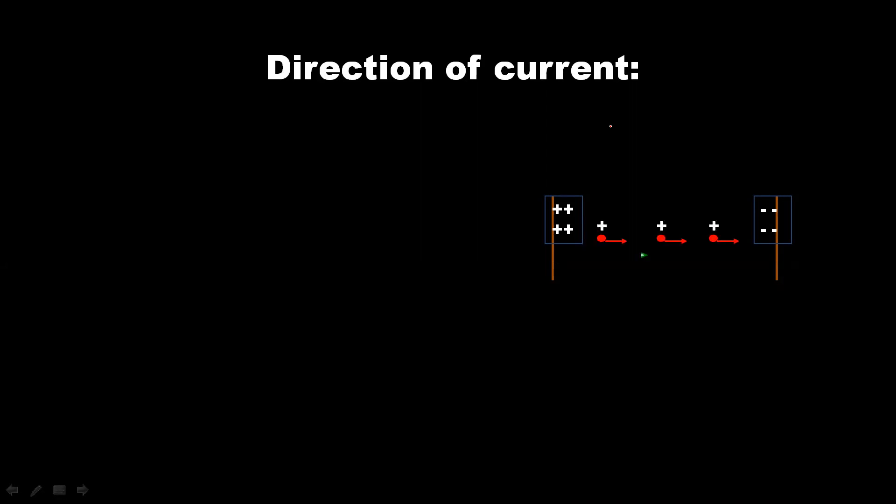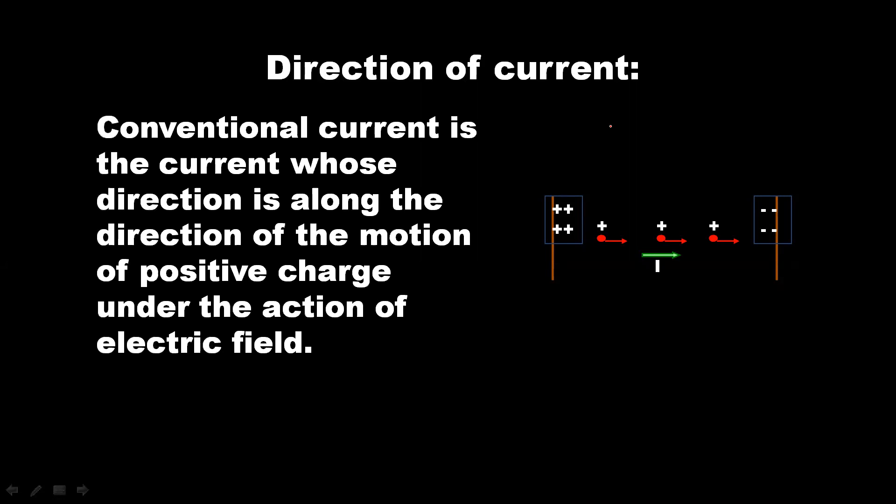The current is the movement of electrons. Conventionally, in a circuit diagram, the current direction is opposite to that of electron flow — from the positive terminal to the negative terminal.